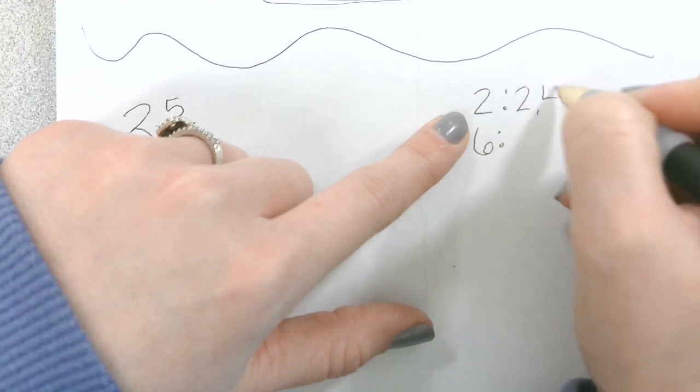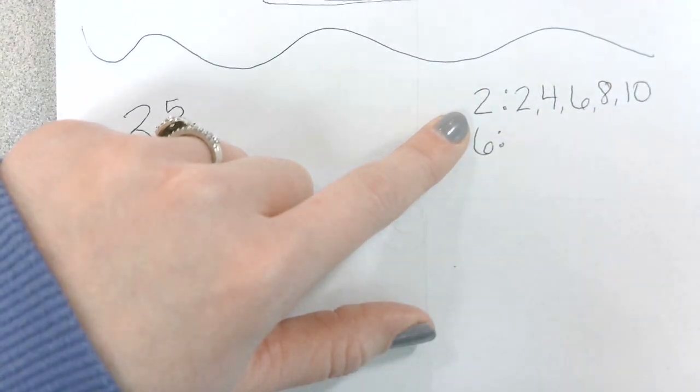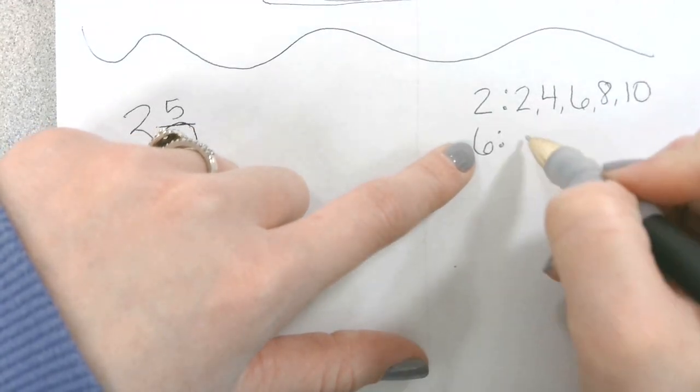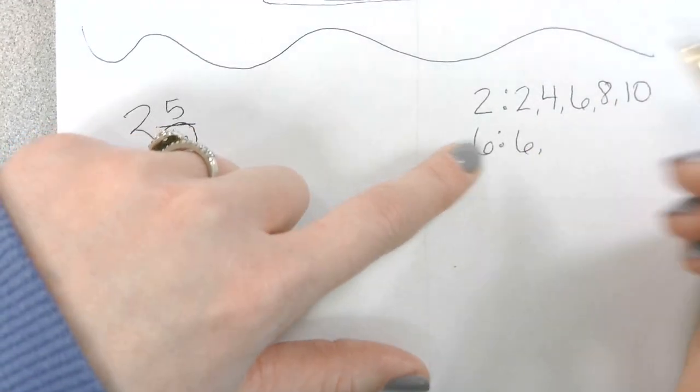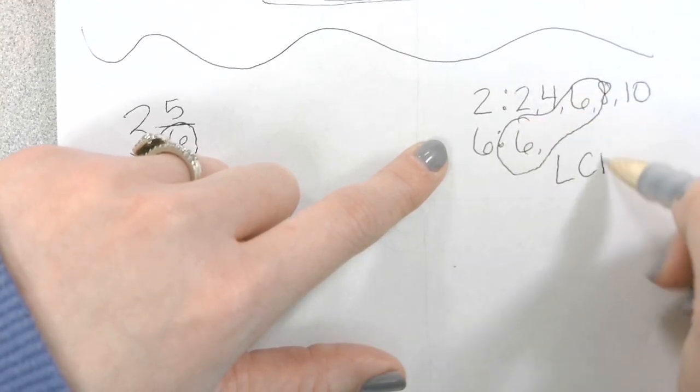So 2, 4, 6, 8, 10. Now let's list the multiples of 6 until we see something in common. 6. Oh, we can stop right there because that is going to be the least common multiple.